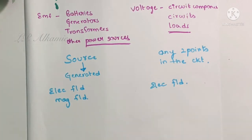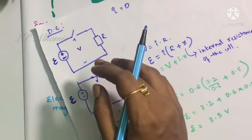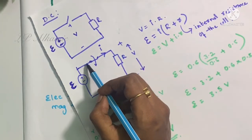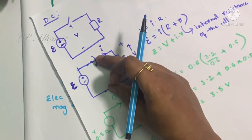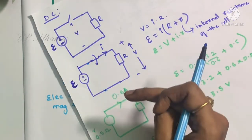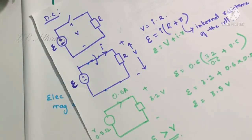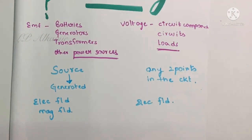Voltage is the difference in electrical states of two points in a circuit, whereas EMF is the force which caused that difference. In a circuit, the electrical state of one point will be different from another, and that difference is given by the voltage. The force which created this difference is the EMF. Voltage is something caused due to the flow of current in the circuit, whereas the current itself is created by the EMF. The force which drives the current to flow is the electromagnetic force, and due to this current flow, a potential difference exists — that is the voltage.